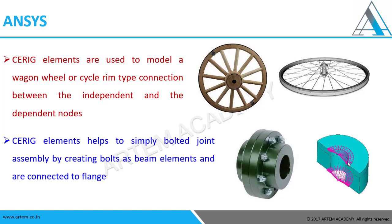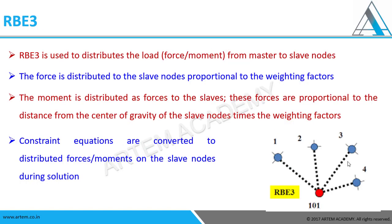Now you should have a complete idea of where to apply CE-rigid special connections - according to the functionality, without changing the stiffness, we apply CE-rigid. Coming to the next connection, that is RBE3. RBE3, as the name indicates, is used to distribute the force or moment with the help of a master node. Here the center node is dependent and the slave nodes are independent. RBE3 is always connected by weighted functions.